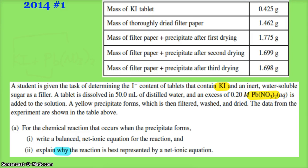Here we see a question from 2014 where a student is given the task of determining the iodide content of tablets that contain potassium iodide and an inert water-soluble sugar as a filler. A tablet is dissolved in 50 mL of distilled water, and an excess of 0.2 molar lead nitrate (Pb(NO₃)₂) is added to the solution. A yellow precipitate forms, which is filtered, washed, and dried. The data is shown in the table above.